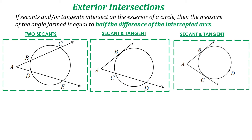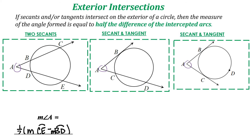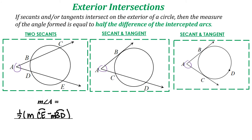The last rule we're going to look at is for exterior intersections, where all intersections are on the outside of the circle. If secants or tangents intersect on the exterior of a circle, then the measure of the angle formed is equal to half the difference of the intercepted arcs. For two secants, the measure of angle A equals one-half of arc CE minus arc BD.